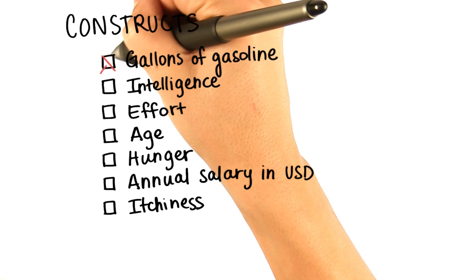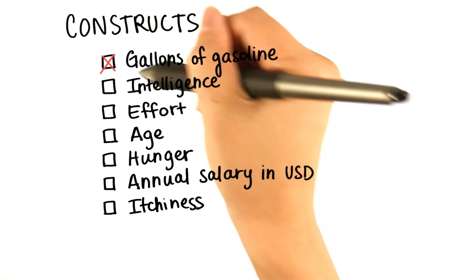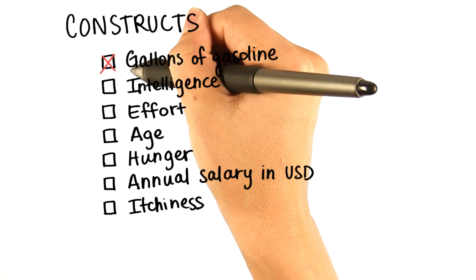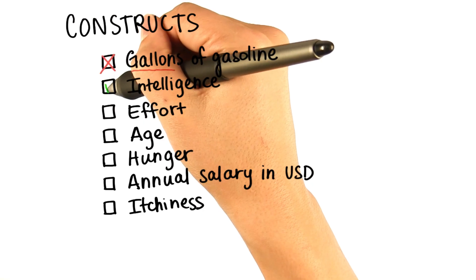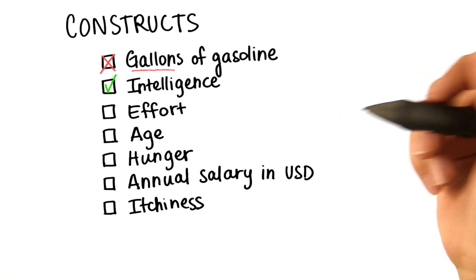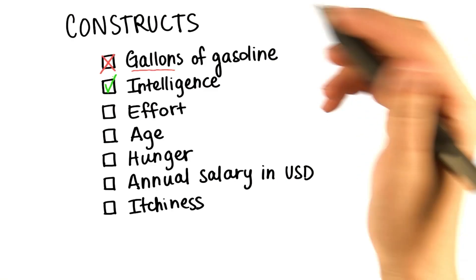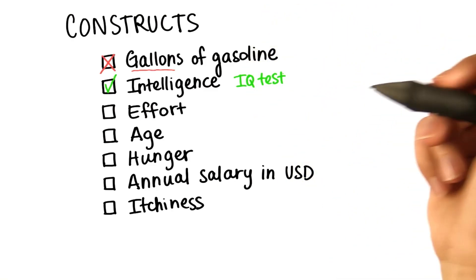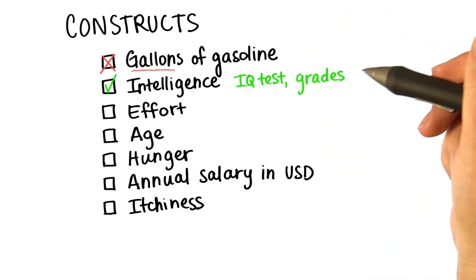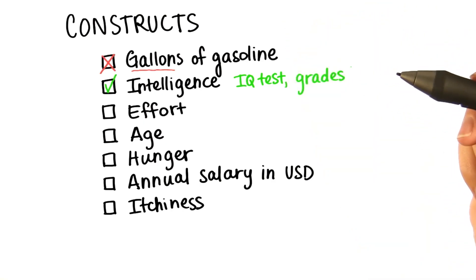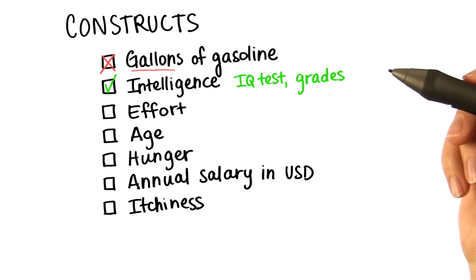Gallons of gasoline is not a construct because we already have a way of measuring it in gallons. Intelligence is a construct. How do we measure and define intelligence? We have the IQ test, or maybe we could measure intelligence with grades, but grades may also help us measure something like how hard we're working, like effort.